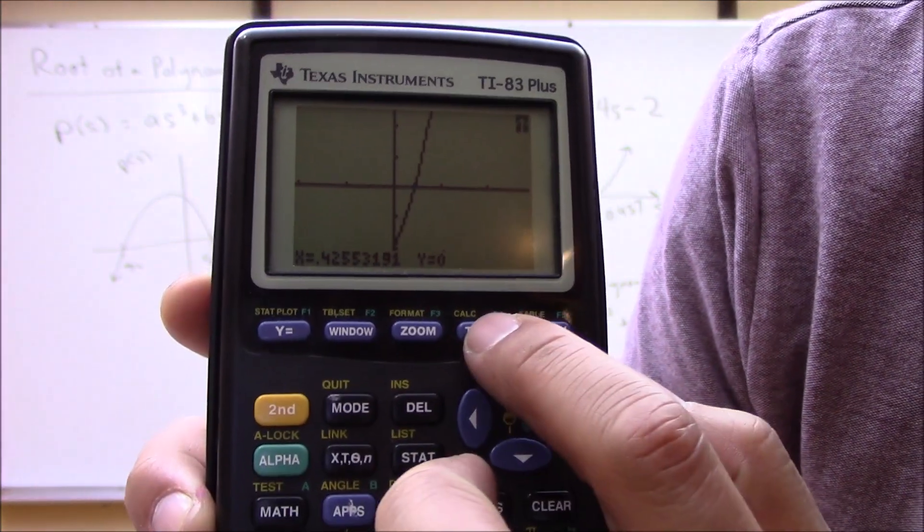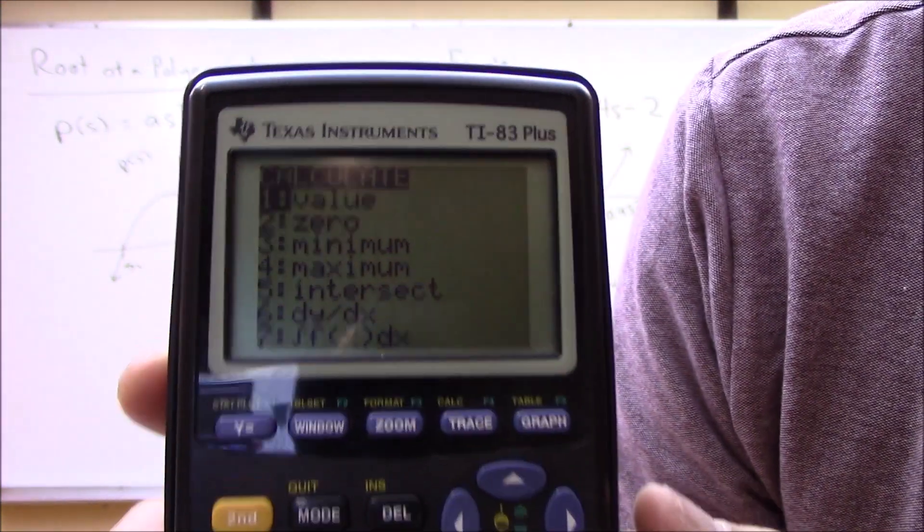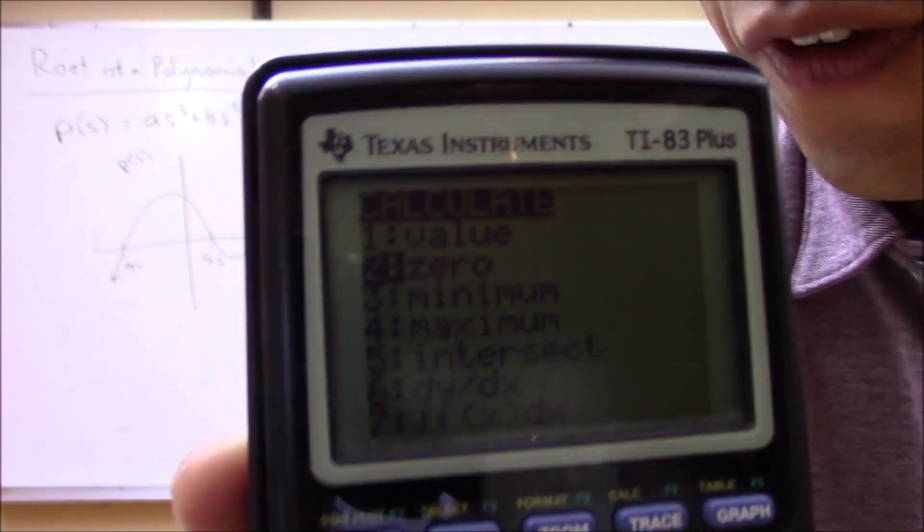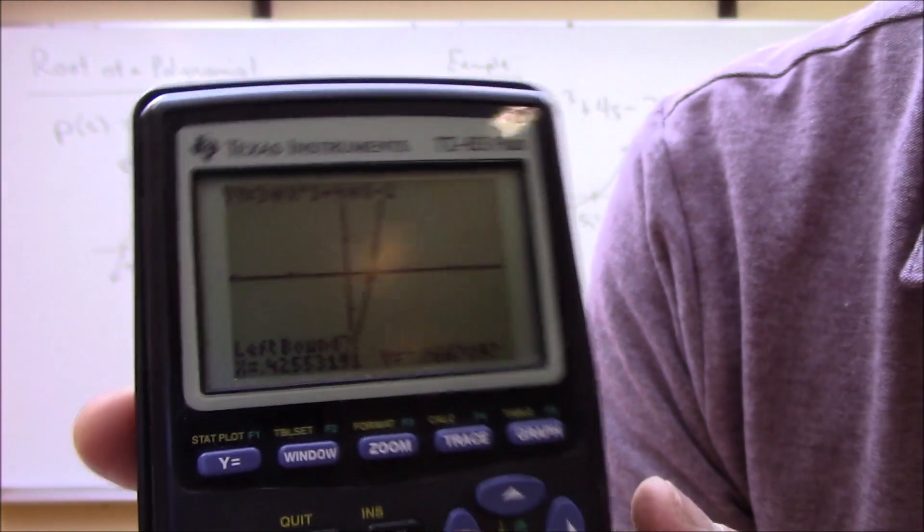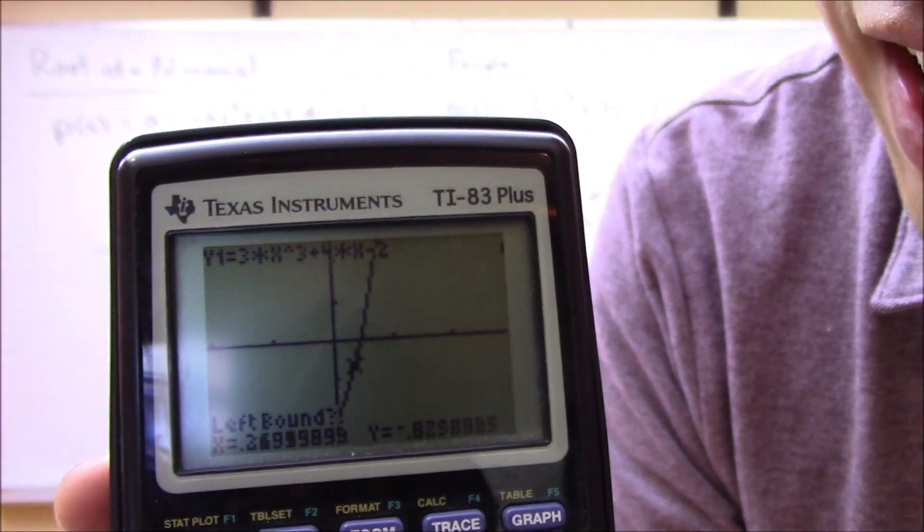But if we want to try to have the calculator solve that for us, let's go ahead and hit second and then calc. And then look at this, it's got a zero function, so we can try to find zero crossing.